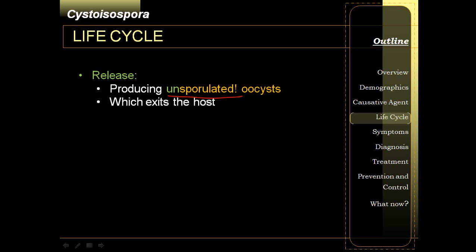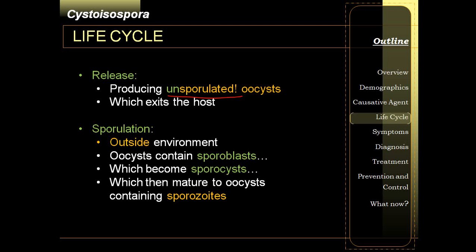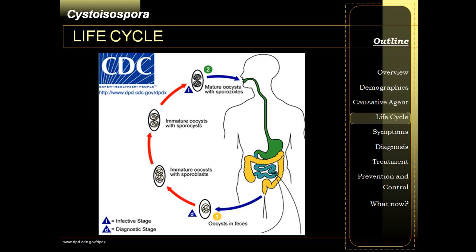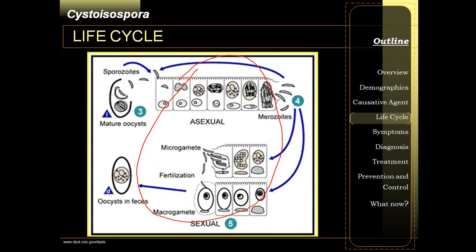These oocysts then exit the host through the stool, and similar to Cyclospora, they undergo sporulation in the outside environment. Before becoming sporozoites, they undergo several stages such as sporoblastosis and sporocystosis, eventually forming sporozoites inside the oocyst. Both sexual and asexual life cycle stages happen inside the intestinal epithelial cells.